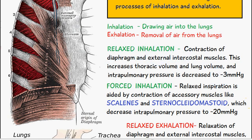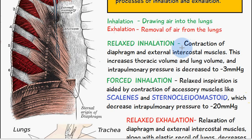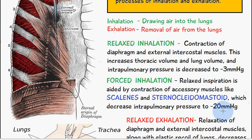For forced inhalation, you have the same contraction of the diaphragm and external intercostal muscles, but additionally, accessory muscles contract — specifically the scalene muscles and the sternocleidomastoid muscles. This decreases intrapulmonary pressure to minus 20 millimeters of mercury, creating a much greater pressure difference, resulting in a greater force and greater volume of inhalation.